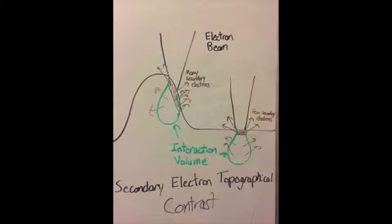Surfaces that are perpendicular, or near to that, with the electron beam will have very little interaction area with the beam and produce few electrons, whereas surfaces that have a low angle to the beam will have much more area for electrons to be generated, resulting in a much brighter pixel.